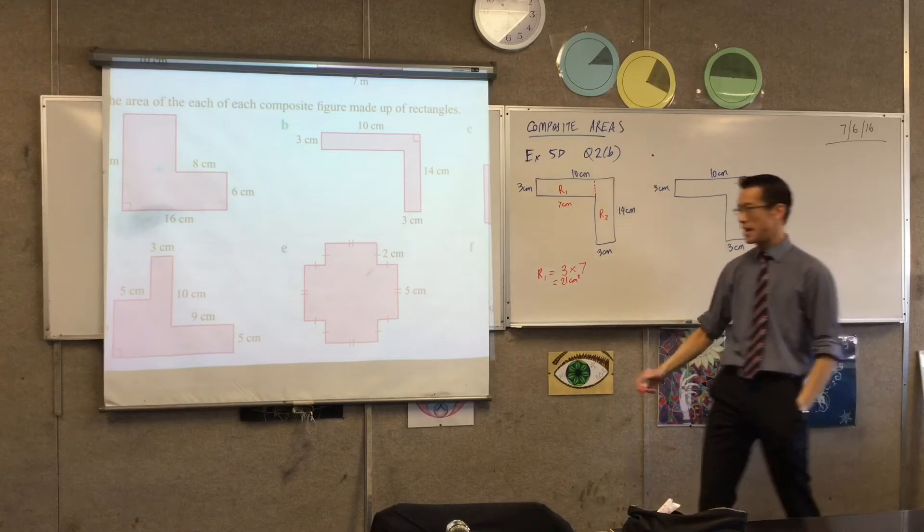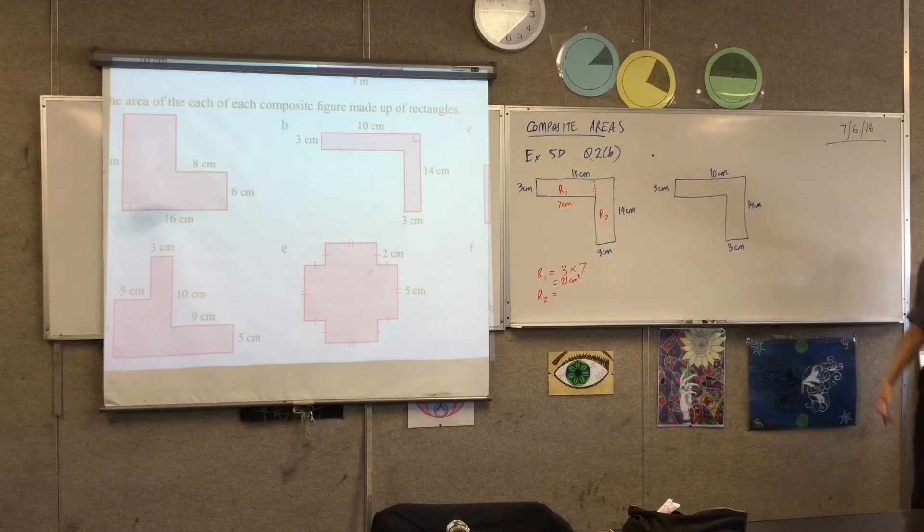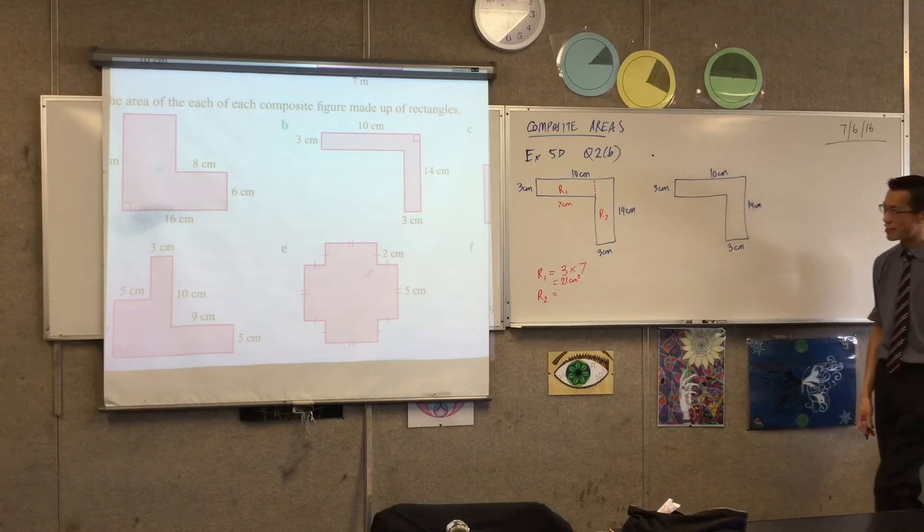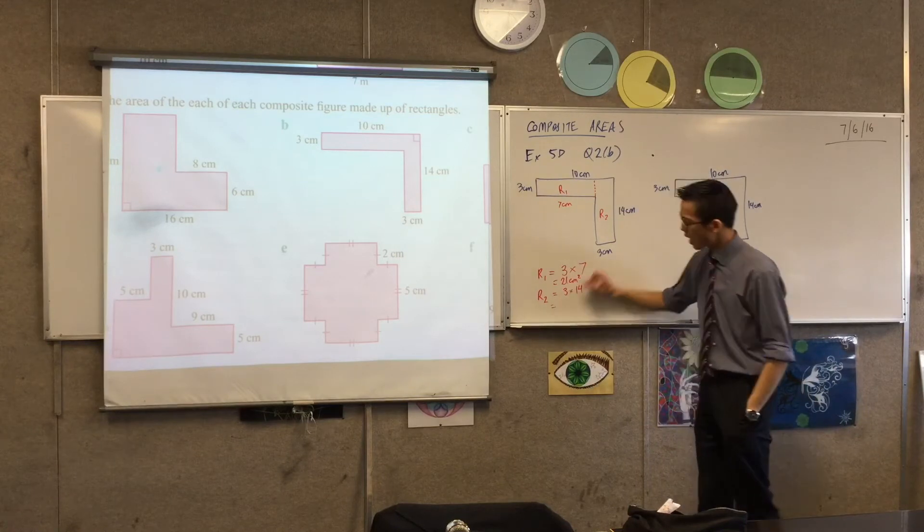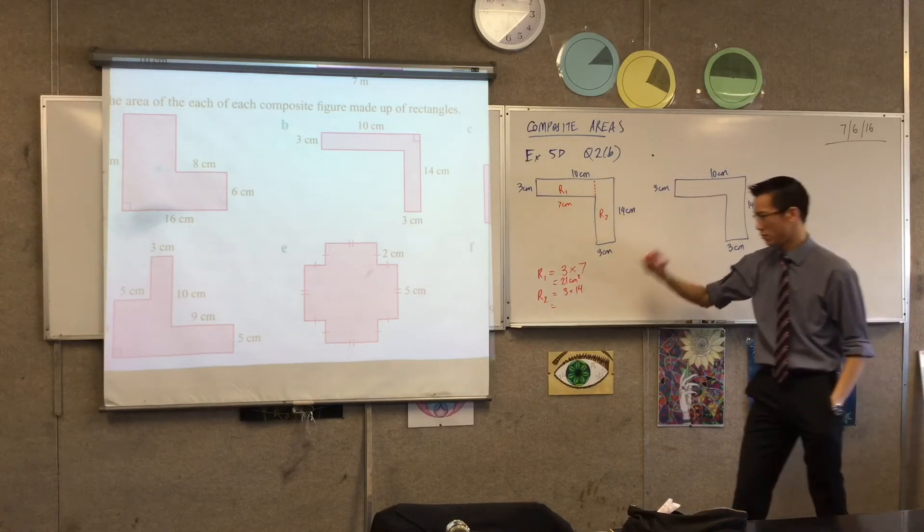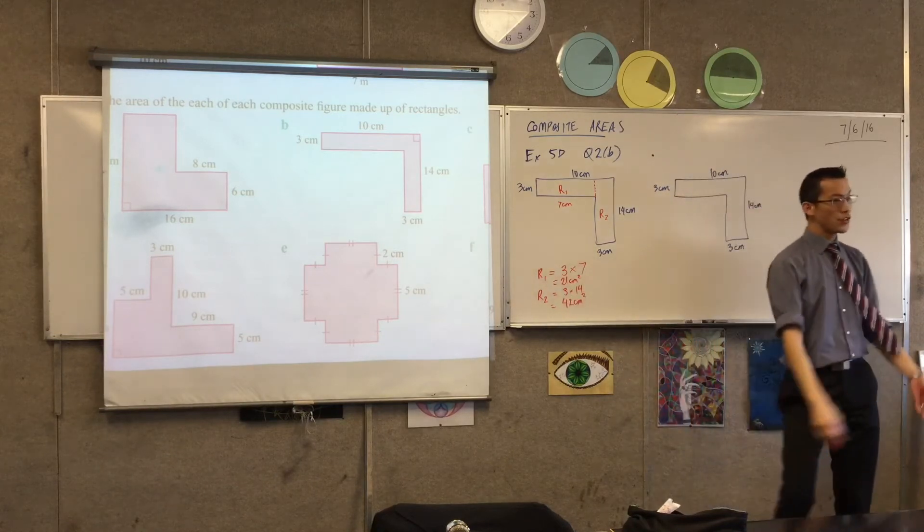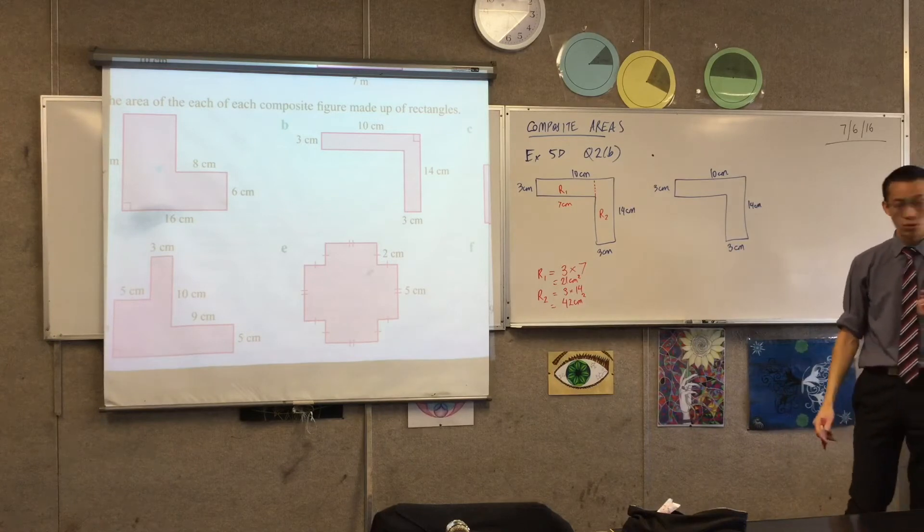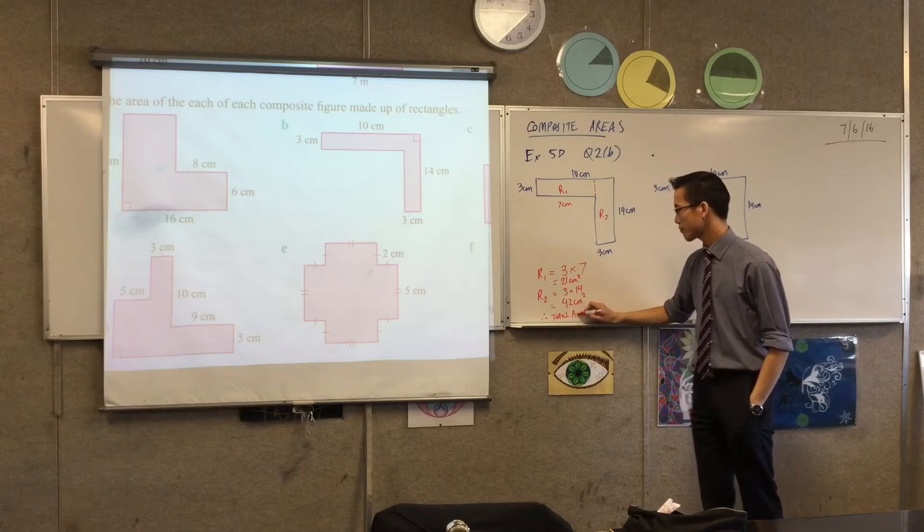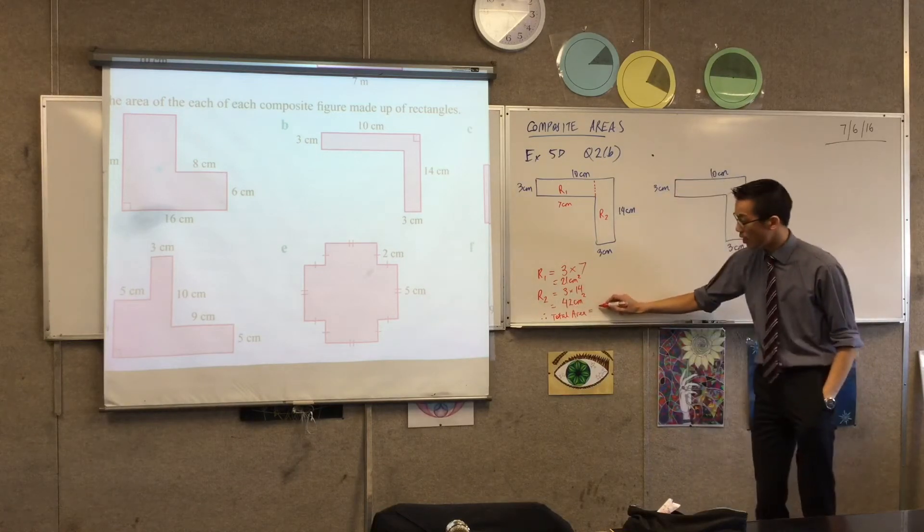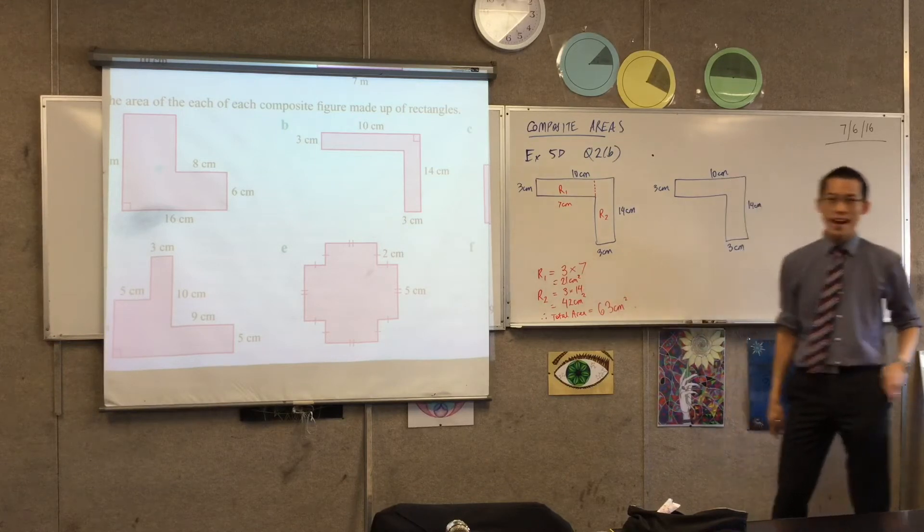And I'm going to rinse and repeat for the second rectangle. This time, because of the way I've chopped it up, I actually do have the length and breadth of rectangle 2. So, I'm just going to write 3 by 14. 3 by 14 I think is 42? 42. 42 centimeters. So, you've got all your pieces. This is a nice simple one to begin with. There's only two, so I'm done. Now, I'm going to say, therefore, the total area equals, that looks like 63 square centimeters. And you're done.